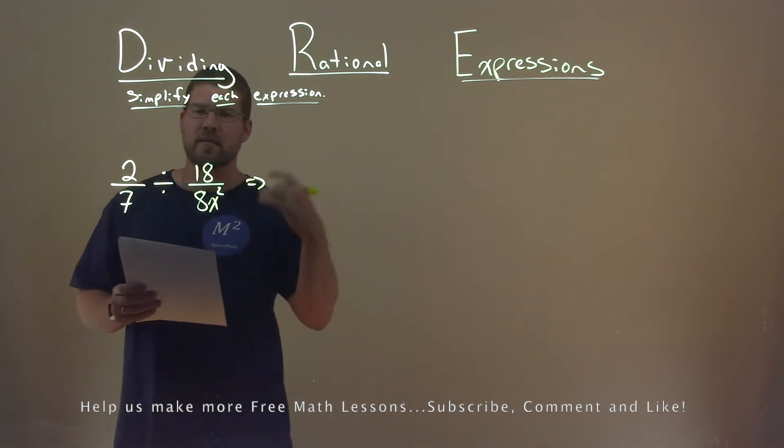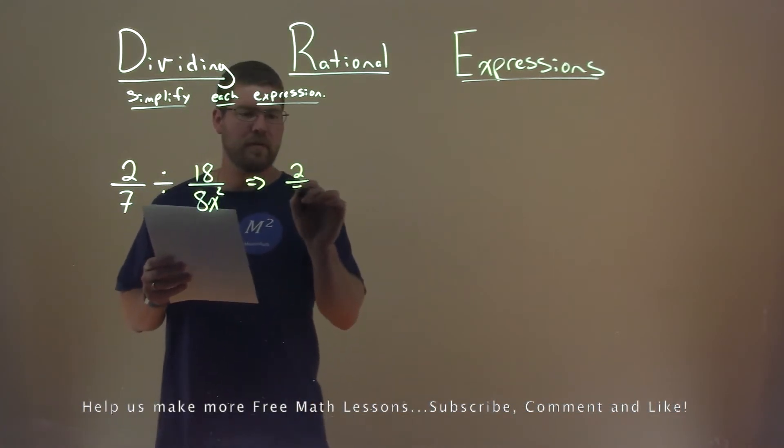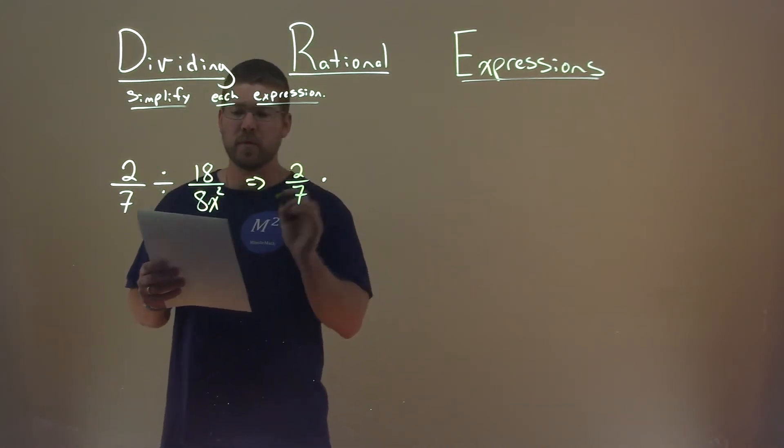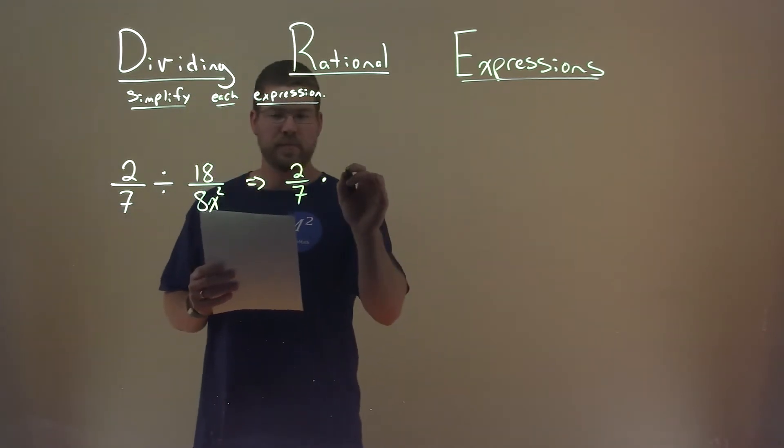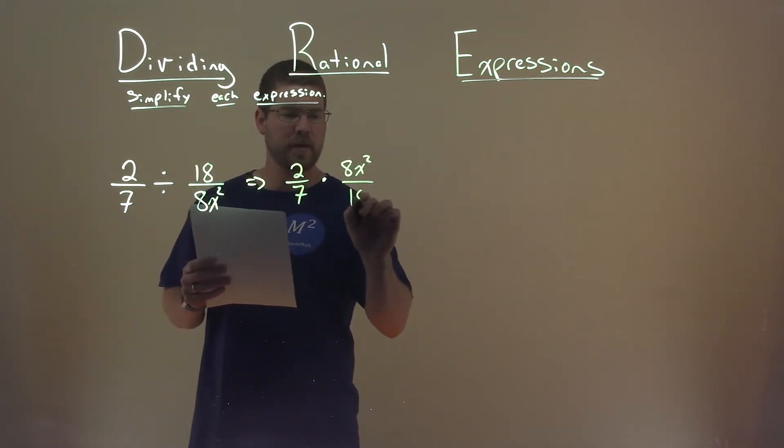First thing I'd like to do is rewrite this as a multiplication problem. 2 sevenths stays where it is, but now we're multiplying and we flip the second fraction. 8x squared over 18.